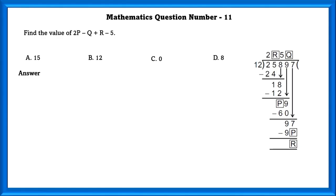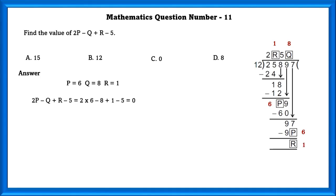Mathematics question number 11. Find the value of 2p minus q plus r minus 5. They have given 25897 divided by 12. 12 × 2 = 24, leaving remainder 1; bring down 8. 12 × 1 = 12; 18 minus 12 = 6. There are 2 p's in the equation, so the same value applies to both. 12 × 5 = 60; 69 minus 60 = 9. Bring down 7; 12 × 8 = 96; 97 minus 96 = 1. Using this, the value of the equation equals 0.